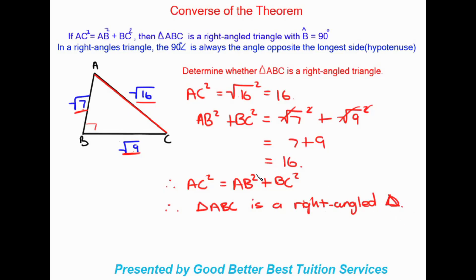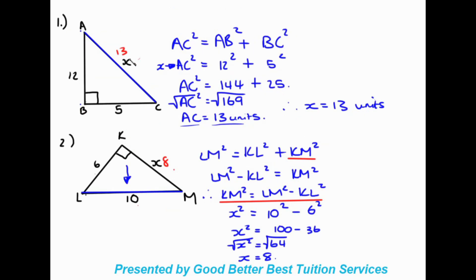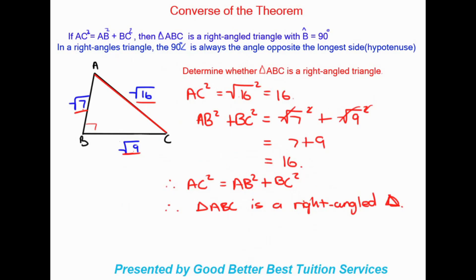Just to recap what we've covered today: we've covered two basic Pythagoras examples — where two sides are given and we find the hypotenuse, and where the hypotenuse is given but one side is unknown so we manipulate the equation. On top of that, we've done the converse of the theorem, which identifies whether a triangle is a right-angled triangle using Pythagoras.